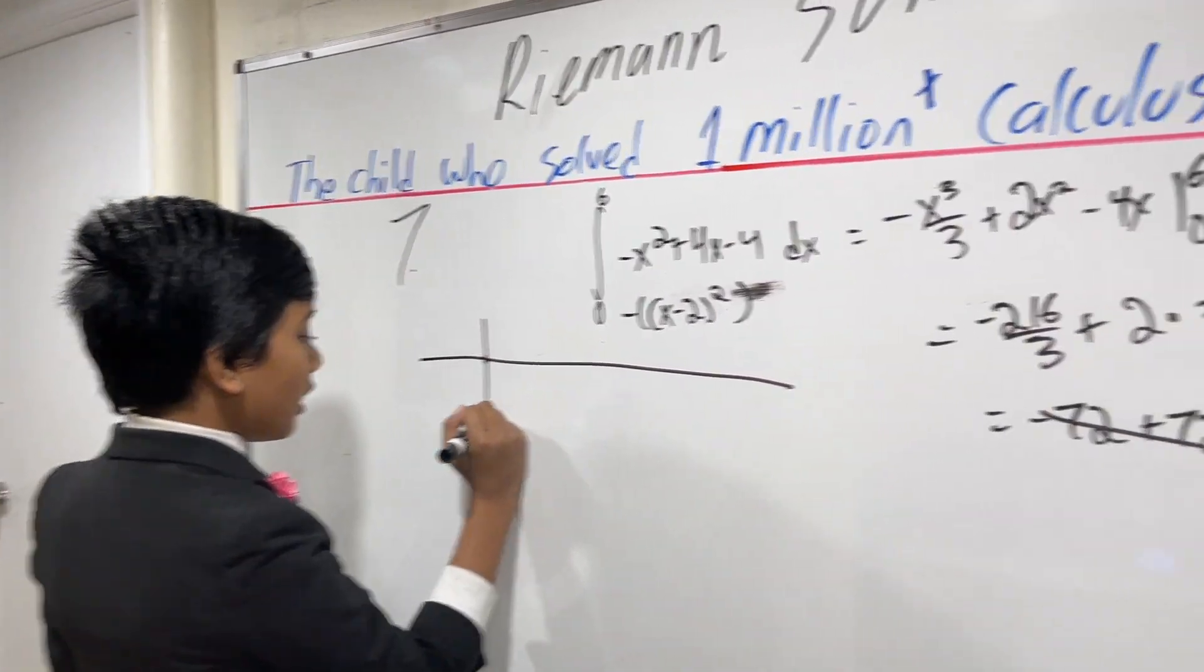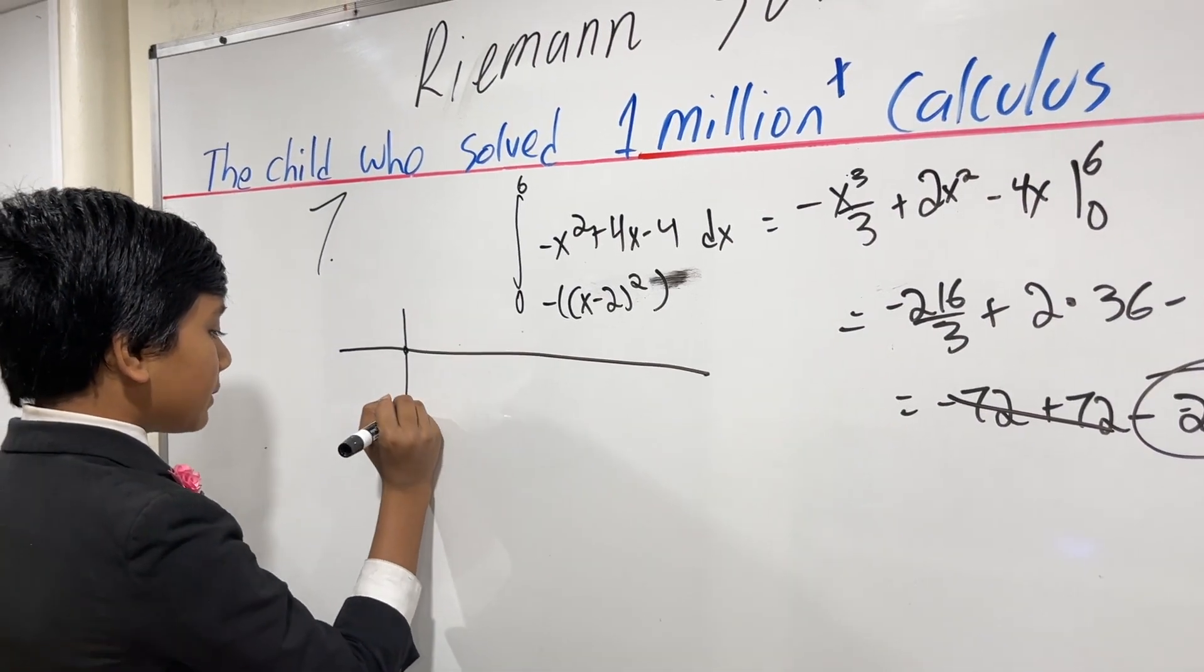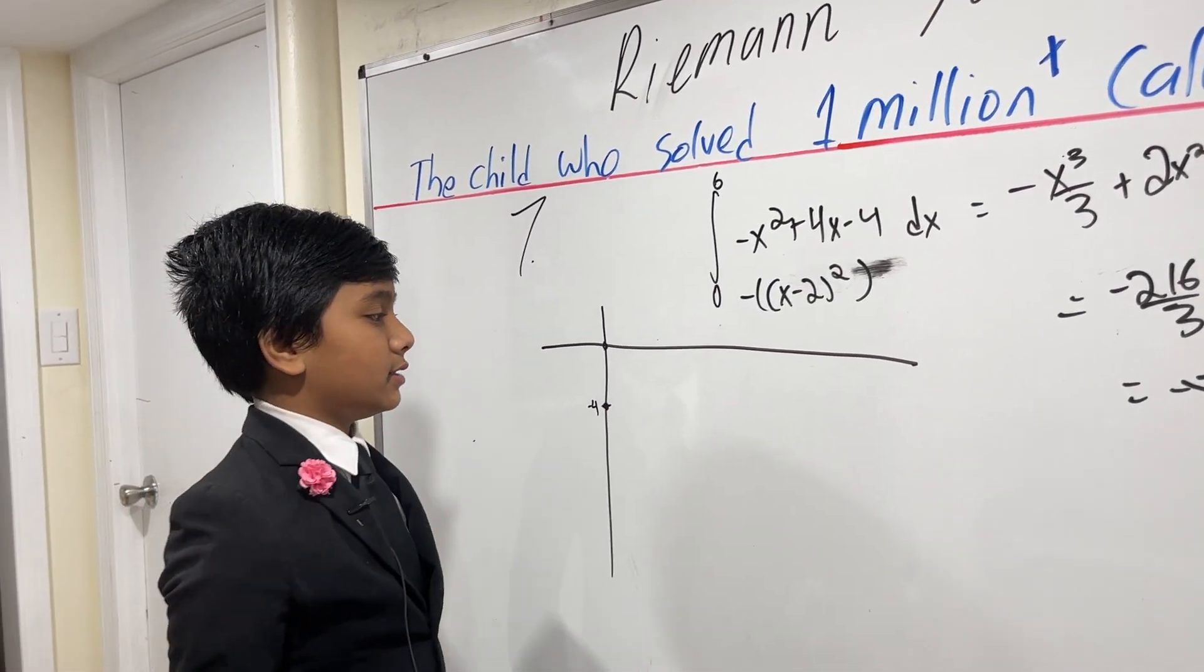Here we have minus 4, because that's the value of the function at 0.